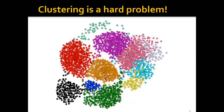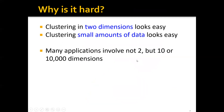It might look easy at first glance, but clustering can sometimes be a very difficult problem. As you can see here, clusters may have different shapes, different densities, and sometimes may not have very clear boundaries — for example, between this cluster and this cluster. Besides, although clustering in two dimensions with small amounts of data looks easy, many applications actually involve not two, but 10 or even 10,000 dimensions. So that might be very, very difficult.